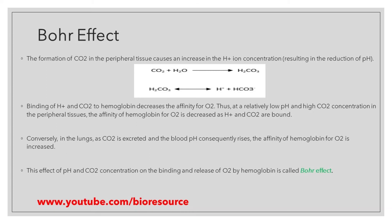When the pH is low and a high concentration of carbon dioxide is present in the peripheral tissue, oxygen affinity towards hemoglobin is decreased due to the binding of H⁺ and carbon dioxide to the hemoglobin. Whereas in the lungs, as carbon dioxide is excreted and the blood pH constantly rises, the affinity of hemoglobin for oxygen is increased.